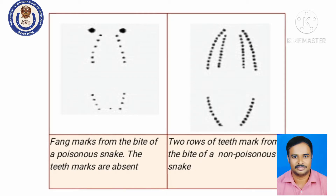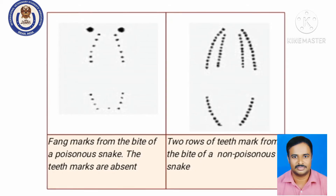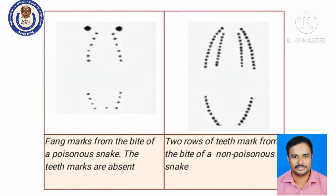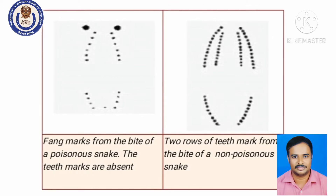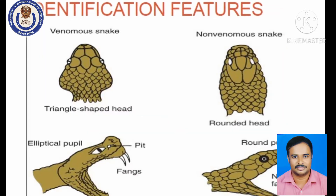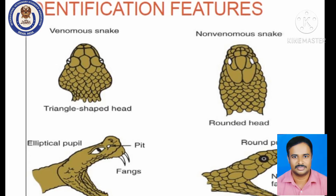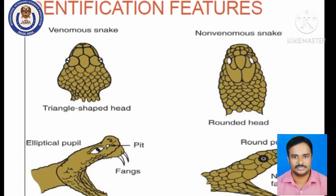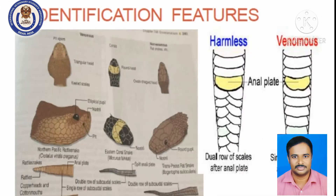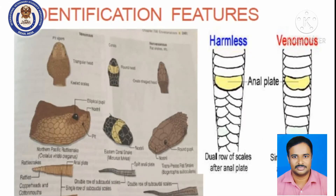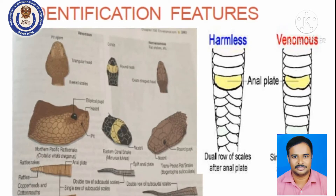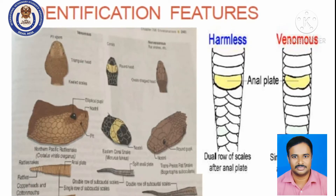Fang marks can also help differentiate whether the bite is from a poisonous or non-poisonous snake. Fang marks are not clearly visible in poisonous snake bites. Whereas in a non-poisonous snake bite, two clear rows of teeth marks are visible. So if the fang marks are not clear, one can suspect it may be because of a poisonous snake bite.